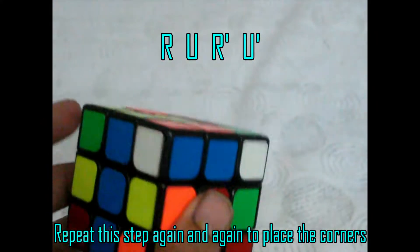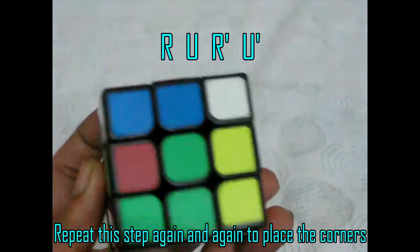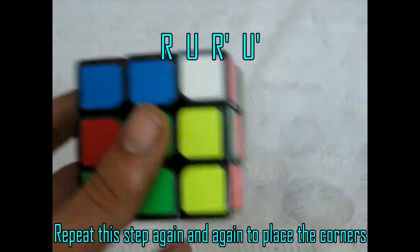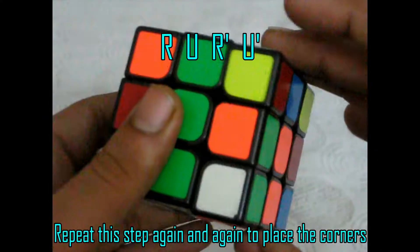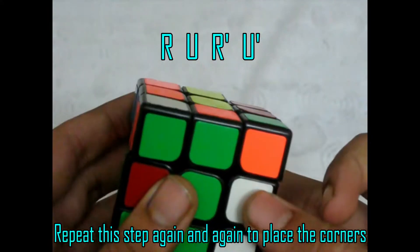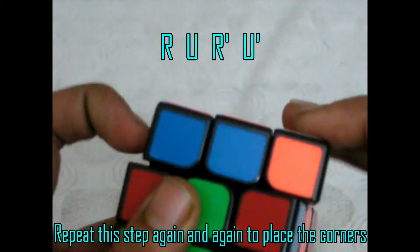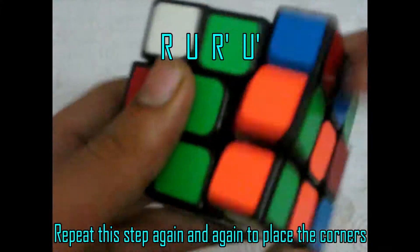I just repeated that one step again and again and my corners were solved. Let me show you once again: r u r prime u prime, r u r prime u prime, then you keep on doing this.